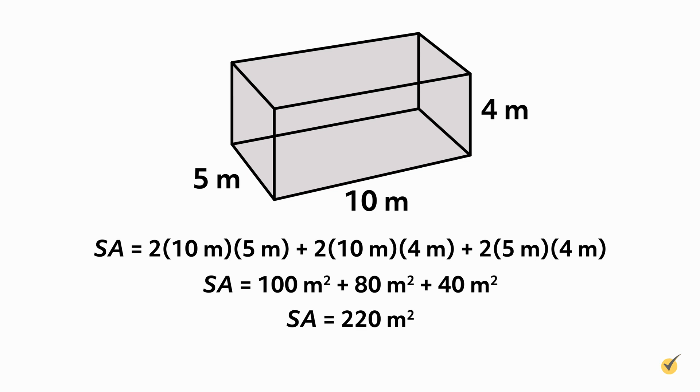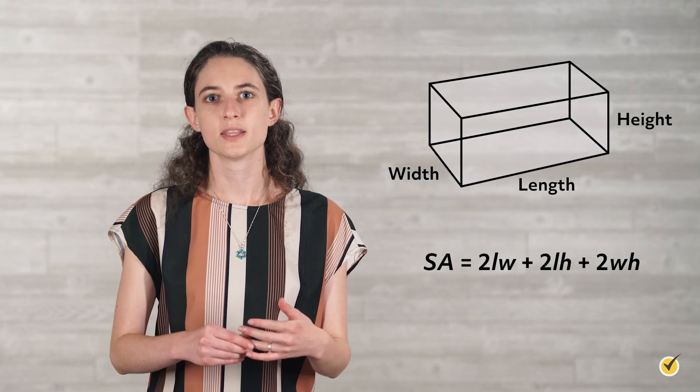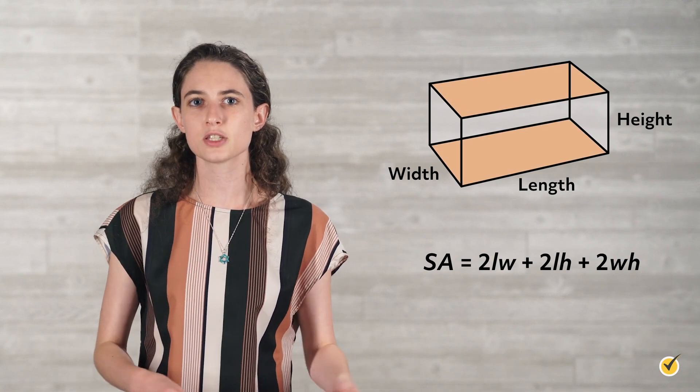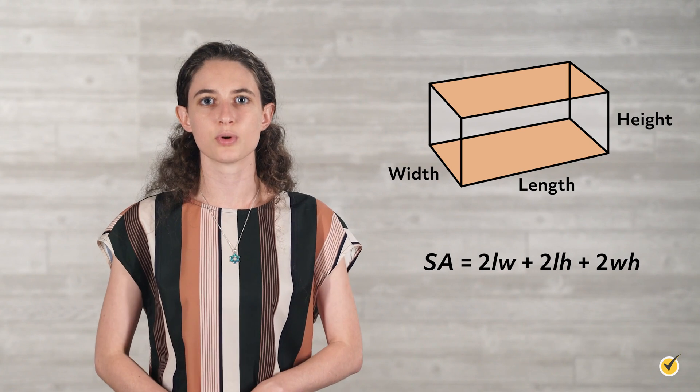But it's worth the time to take a moment to look at what the formula is really doing. The first term, 2 times length times width, is double the length times the width. This is calculating the area of the bottom and the top of the rectangular prism. The 2 is there to double the area of either one of the sides.